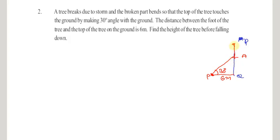Now we have to find the height of the tree before falling down — that means we have to find PQ. To find PQ, we should first know AQ measurement as well as PA measurement. PA is the broken part that bends towards the ground, so in this right-angle triangle we need to find AQ and hypotenuse PA.